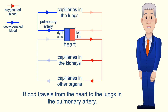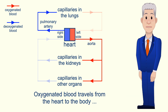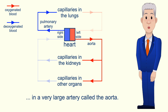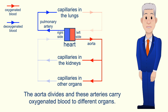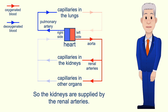Blood travels from the heart to the lungs in the pulmonary artery, and the pulmonary artery is the only artery which carries deoxygenated blood. Oxygenated blood travels from the heart to the body in a very large artery called the aorta. The aorta divides and these arteries carry oxygenated blood to different organs. The individual arteries are named based on the organ that they supply, so the kidneys are supplied by the renal arteries.